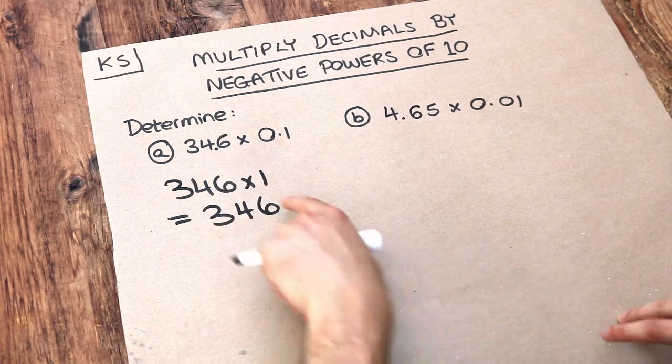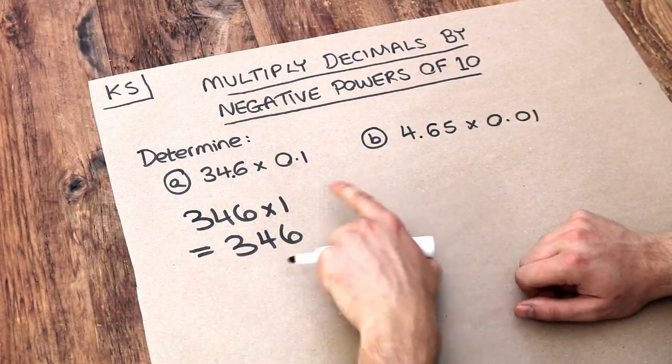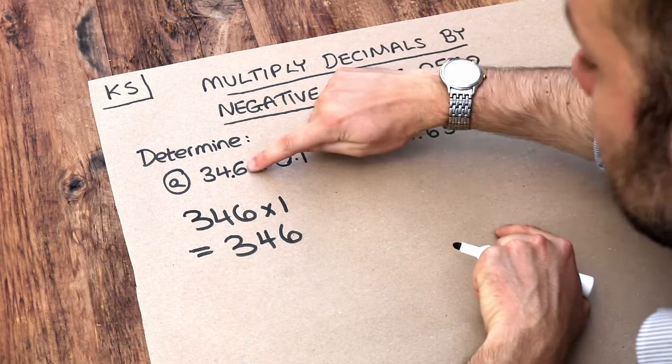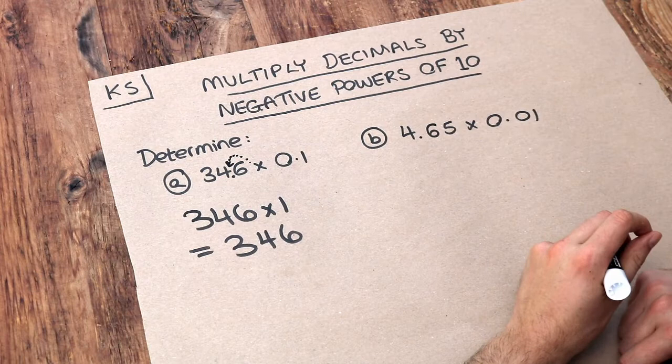But then remember what we do is that we count how many times the decimal point moved from the original numbers. So if we had 346, the decimal point was here, but it's actually here so it's moving left one place.